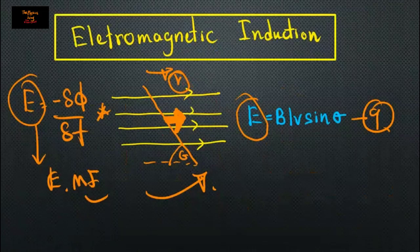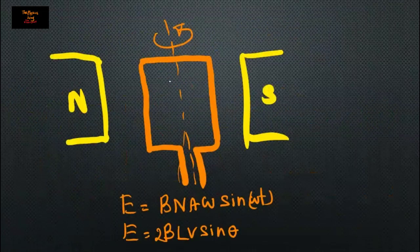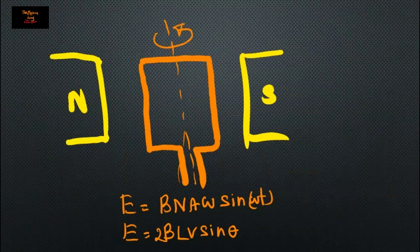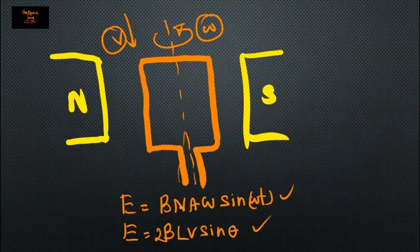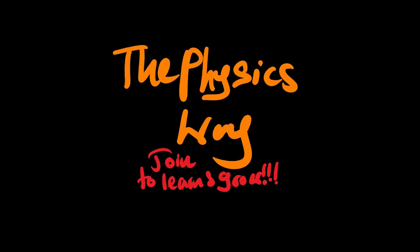For electromagnetic induction inside a loop of wire, e equals B n A omega sine-omega-t, where omega is the angular velocity. If we consider linear velocity instead, we use e equals 2 B l v sine-theta.